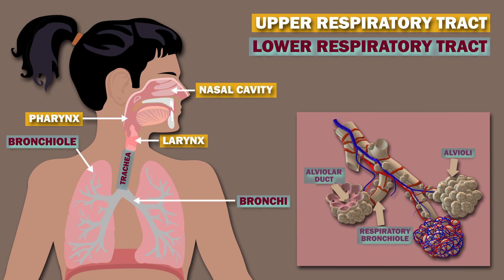The respiratory system can also be divided anatomically into the upper and lower respiratory tracts. The upper respiratory tract consists of structures in the head and neck — in other words, the nose, pharynx, and larynx.